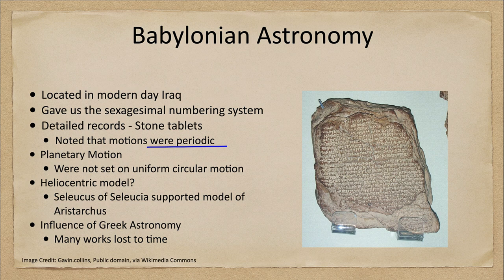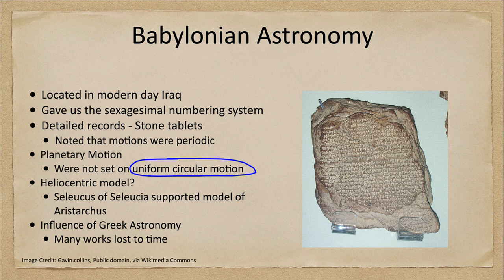They looked at planetary motion and how that worked. One of the key differences is that they were not set on uniform circular motion. This concept hadn't really come up yet, as it comes from the time of Aristotle, who suggested that the heavens were perfect and therefore everything in the heavens would move in the perfect shape — a circle — at a uniform speed. When Aristotle gave us this, it set our definition of how the planets orbited for over a thousand years. But the Babylonians did not have this; they actually gave us non-uniform motion, which Western astronomy would return to at the time of the Renaissance.